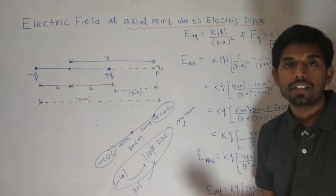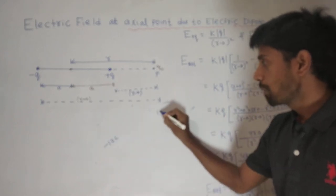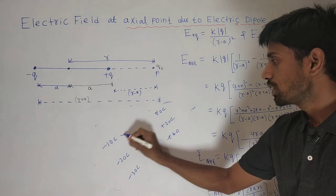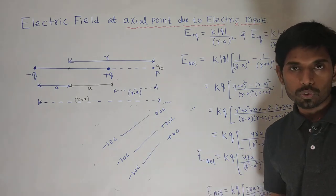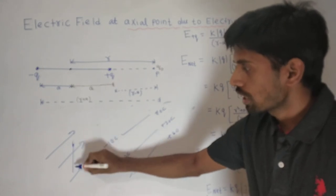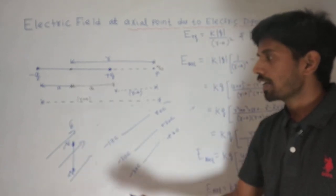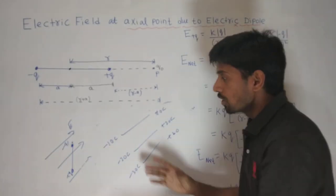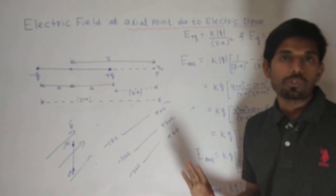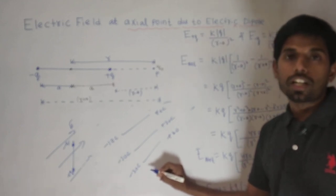When we multiply the magnitude of any one charge by the distance between the two charges, a term is obtained which is given the name dipole moment. Why did the term dipole moment arise? For example, suppose you have 10 coulombs and plus 10 coulombs, then minus 20 coulombs and plus 20 coulombs, then minus 30 coulombs and plus 30 coulombs. Will all three have the same strength? Will all three behave the same way inside a uniform electric field?